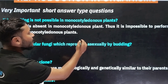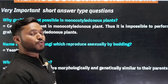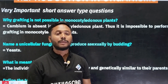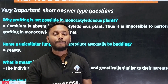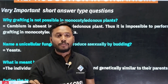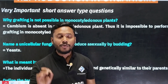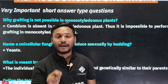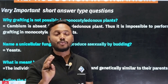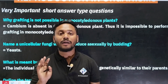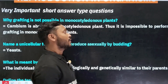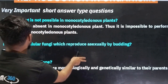What is it? We have grafting in the vascular column. So the vascular column does not have cambium — it is a monocotyledonous plant. So, grafting is not possible. Next question: